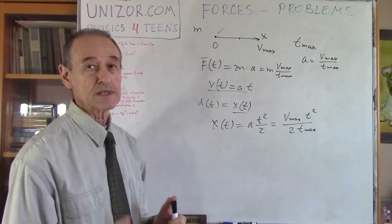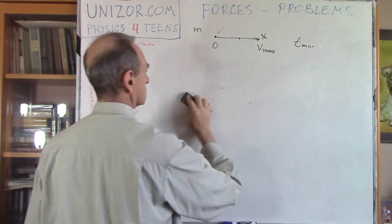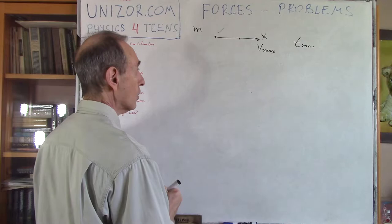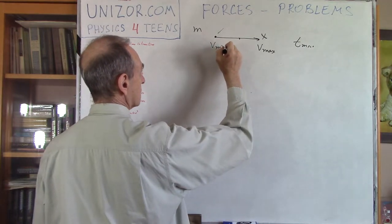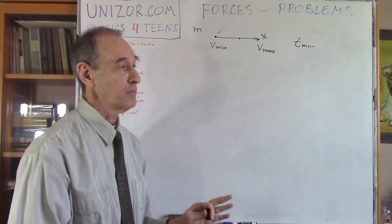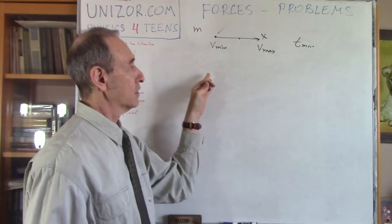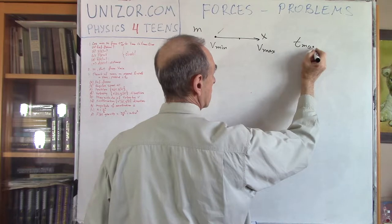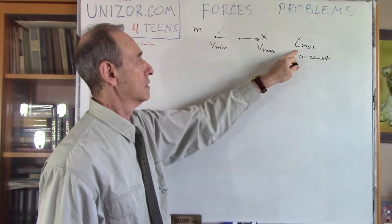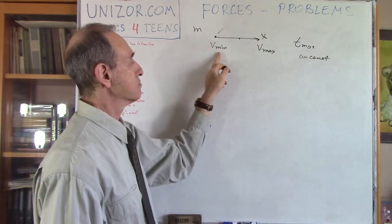My second problem is almost exactly the same, except one little detail. At time t = 0, my speed is already something — it's v_min. So the car was doing whatever before this moment, but at t = 0 my speed was v_min, and then I started accelerating uniformly. So a is still a constant, and I'm accelerating during the time from t = 0 to t = t_max, uniformly with constant acceleration from v_min to v_max.